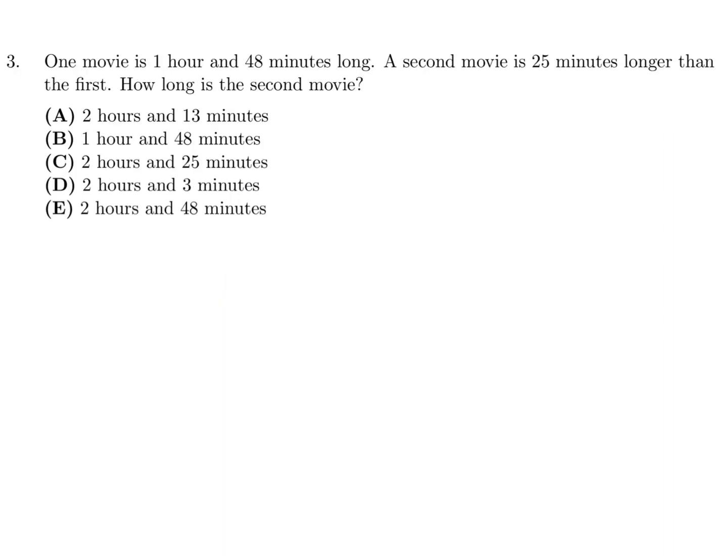One movie is 1 hour and 48 minutes long. A second movie is 25 minutes longer than the first. How long is the second movie? You're basically taking 1 hour and 48 minutes, then adding 25 minutes. That's 1 hour and 73 minutes. Well, 73 minutes is like 1 hour and 13 minutes, and therefore that's 2 hours and 13 minutes.